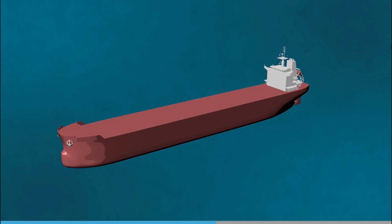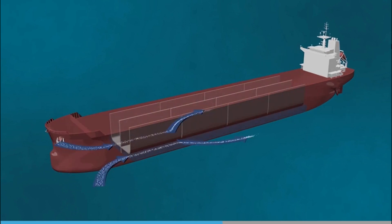Natural exchange can be considered a special case of the flow-through method but without using pumps. Water enters through an opening in the forward end, is led into the tanks, and exits at the aft end. This method is limited to tanks below the water line.